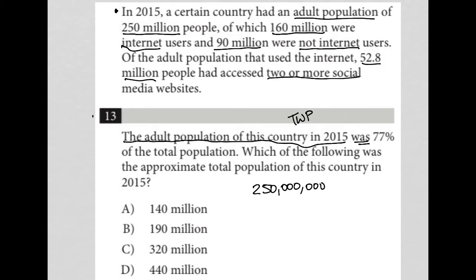"Was" becomes equals. 77% becomes 0.77 — the decimal form of 77%. "Of" is multiply, so I'll put parentheses for multiplication. The total population is a number we don't have, so I'm going to relate that to a variable, capital T. There is the translation.